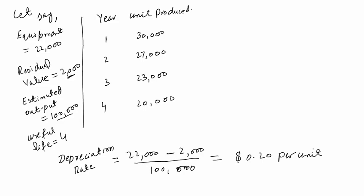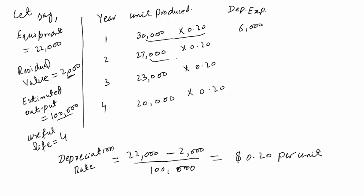We will multiply the rate with the units of output produced each year. The depreciation expense in year 1 is 30,000 multiplied by 0.20, which equals 6,000. In year 2: 27,000 multiplied by 0.20 equals 5,400. In year 3 we get 4,600, and in year 4 we get 4,000.